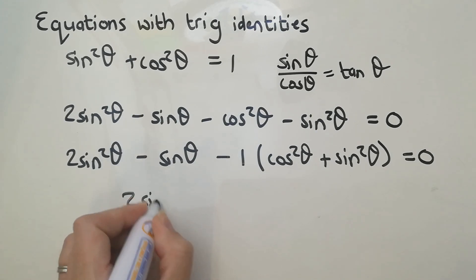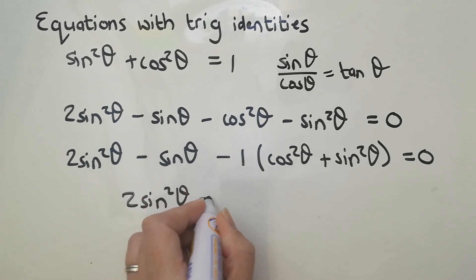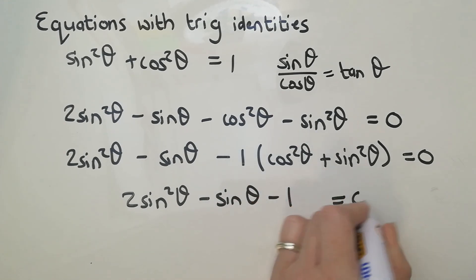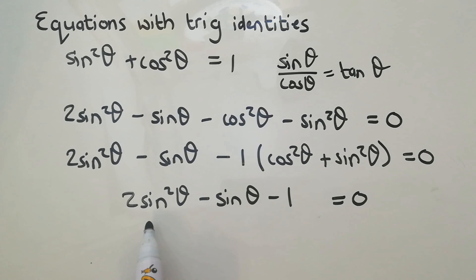What I'm actually left with is 2sin²θ - sinθ - 1 = 0, and that is a trinomial that is quadratic. You're going to get your two answers out, you're going to factorize, you're going to get two brackets, you're going to get two answers out for each bracket. I'm not going to finish this one. If you want to see how to finish this type of equation by factorizing, then check out my video on equations with factorizing.